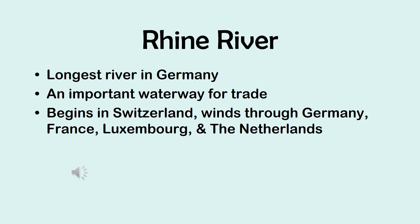From a history point of view, the Rhine River was actually the farthest extent that the Roman Empire was able to expand to. The borders reached the Rhine, and historically the Rhine River has always been considered the border of Germany.